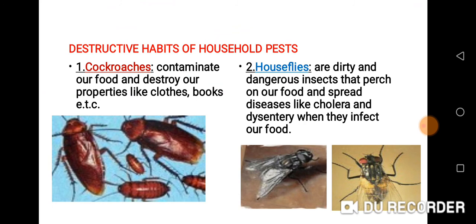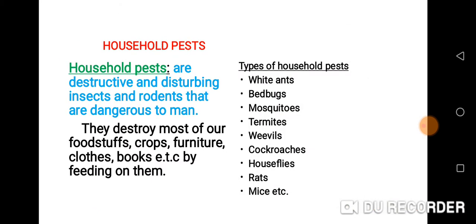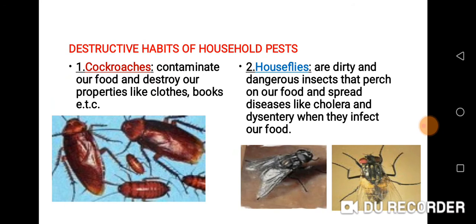What are the destructive habits of these household pests? Cockroaches — as you can see the pictures on the screen — contaminate our food and also destroy our properties like clothes and books. If you keep your clothes in your wardrobe and don't take proper care of them, you will notice that cockroaches can invade the place. There are times where we always keep our books.